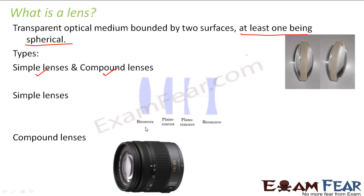A simple lens includes biconvex (both surfaces convex), plano-convex (one plane, one convex), plano-concave (one plane, one concave), and biconcave (both surfaces concave). A compound lens is a combination of simple lenses — for example, a biconvex lens combined with a plano-convex lens forms a compound lens, meaning multiple simple lenses arranged together.